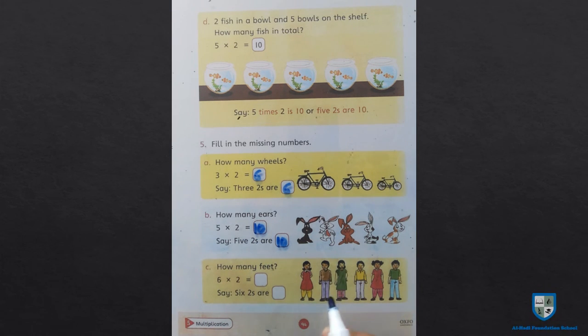Next, how many feet? Now here, how many kids are there? 6. 6 children have 2 feet each. So we will do 6 multiplied by 2. 6 twos are 12, and 6 twos are 12.